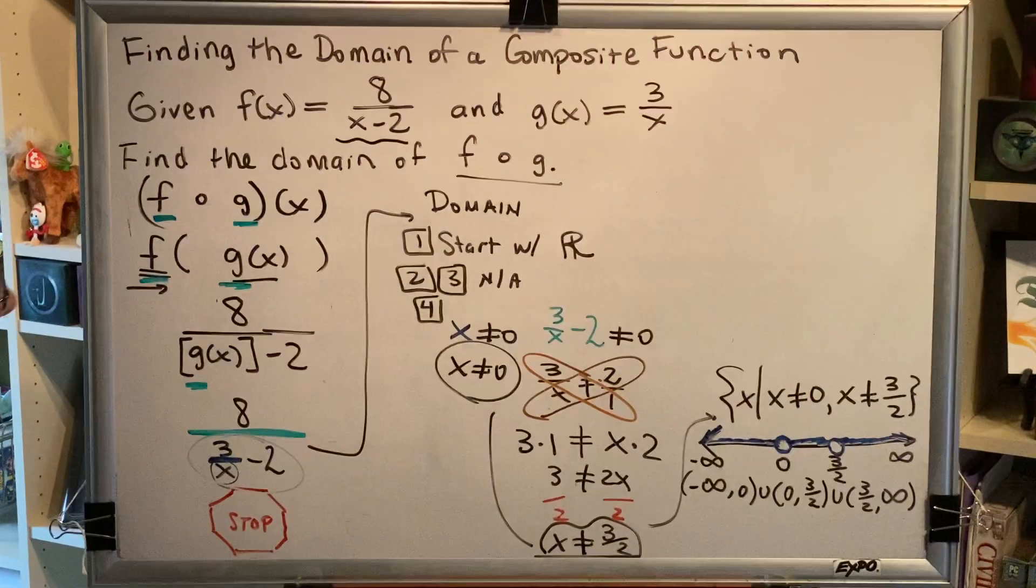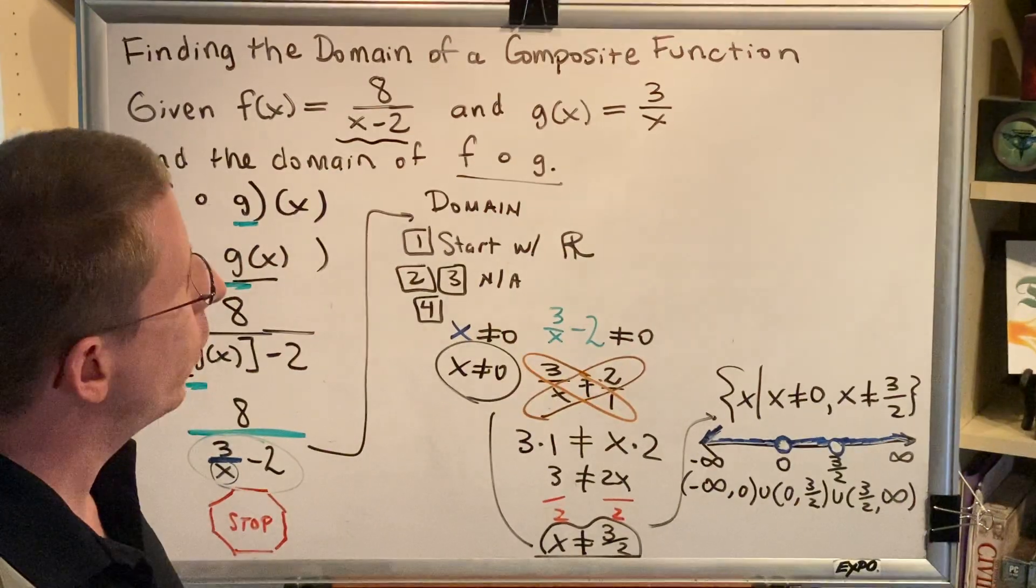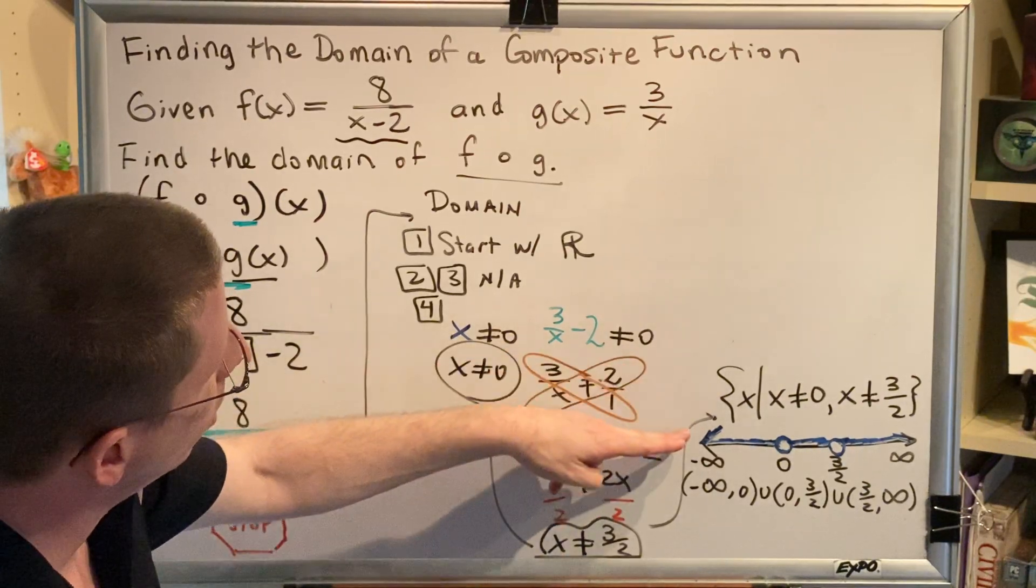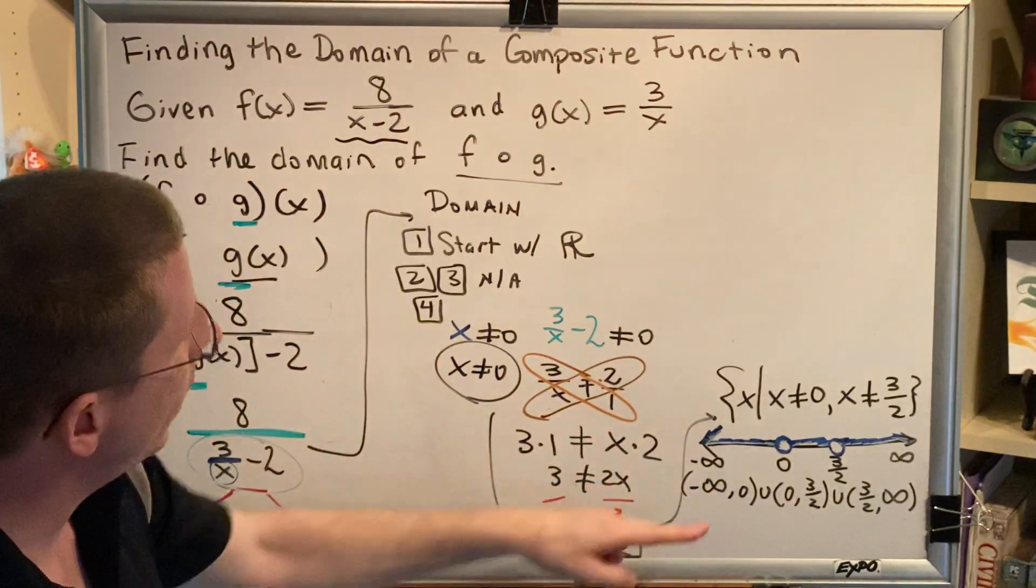This is the domain of our composite function in three different notations: set notation, number line graph, and interval notation.